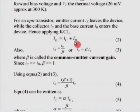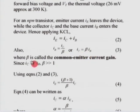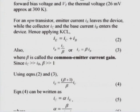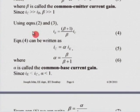We can write another expression: the base current I_B = I_C / β, or I_C = β × I_B, where β is called the common emitter current gain. Since I_C is much greater than I_B, β is much greater than unity. Again using previous equations, we can write the emitter current I_E = ((β + 1) / β) × I_C.